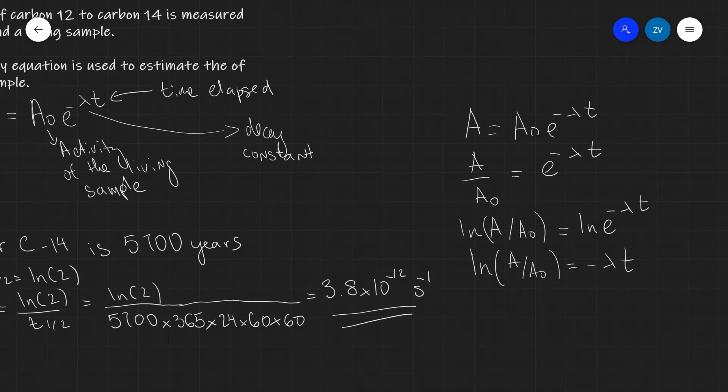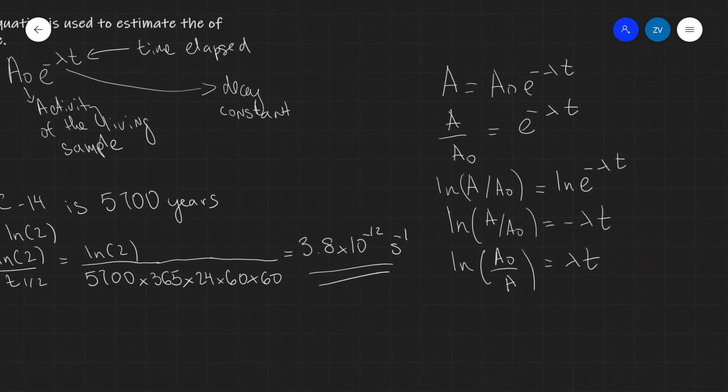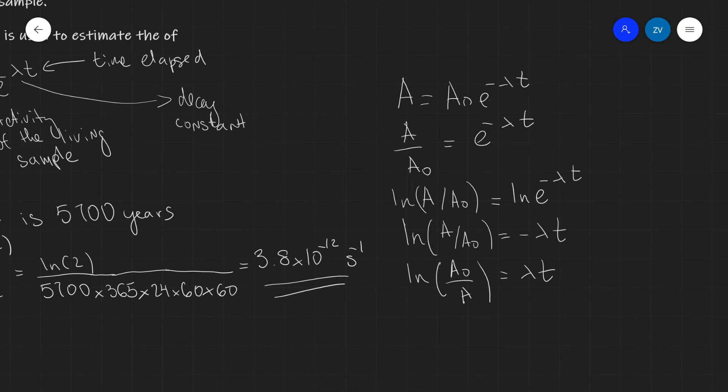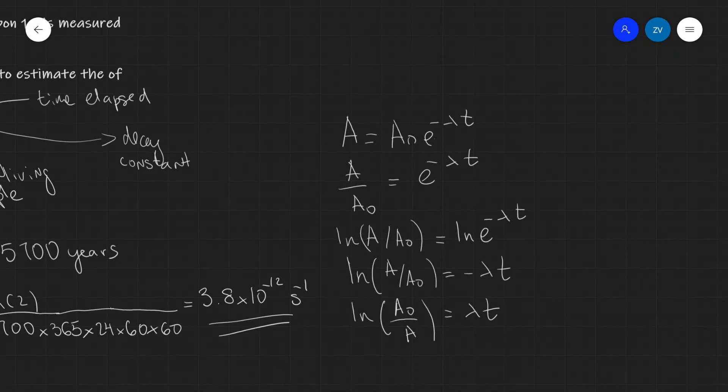Now I'm going to multiply both sides by minus 1, which flips the logarithm. So I get ln(A₀/A) = λt. Finally, for the final step, I can rearrange for the time, getting t = ln(A₀/A) divided by λ.